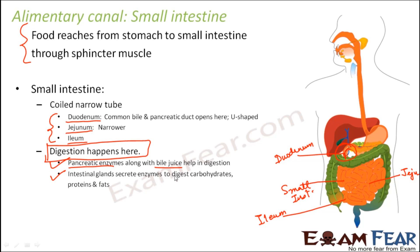The small intestine is where complete digestion happens. Intestinal glands secrete enzymes to digest carbohydrates, proteins, and fats, while pancreatic enzymes and bile juice also act in the duodenum area. To summarize: digestion of carbohydrates starts in the mouth with salivary amylase, proteins are digested in the stomach by pepsin, and then in the duodenum bile juice and pancreatic and intestinal enzymes complete digestion of all remaining carbohydrates, proteins, and fats. The start of digestion is at the buccal cavity and the end of digestion is at the small intestine.